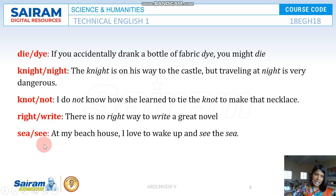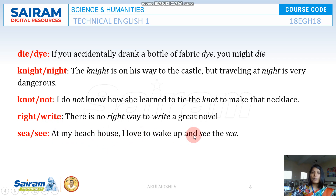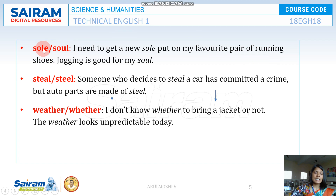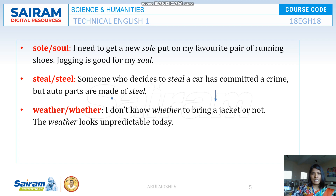The next one is SEA and SEE. For example, at my beach house I have a sea — I love to wake up and see the sea. Then SOLE and SOUL: SOLE is the bottom part inside your shoes, and SOUL refers to your inner being. For example, jogging is good for my soul.